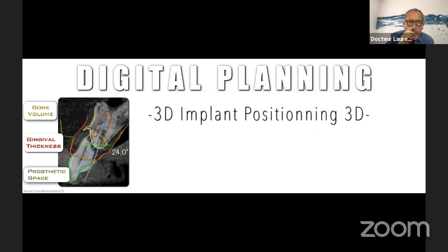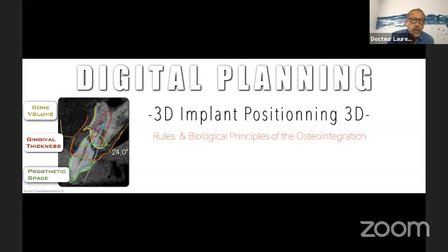What about digital planning? Digital planning is the technology that allows us to do 3D planning and positioning according to the rules and biological principles of osseointegration. This is the most important — the planning allows you to place correctly your implant according to the rules and biological principles of osseointegration. On your slide you have the bone volume, gingival thickness, and the prosthetic space — you can see this on your computer.